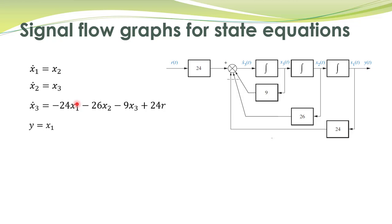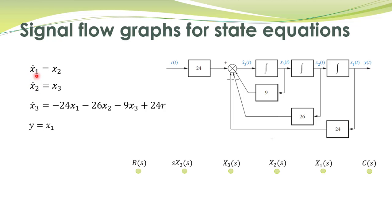In these state equations, there are different signals. For example, you have signal x1, x2, x3, and also their derivatives. We indicate all these signals as nodes over here, so we have x1, x2, x3.